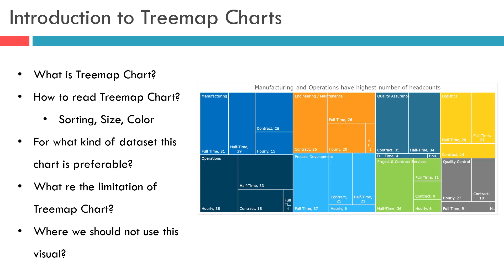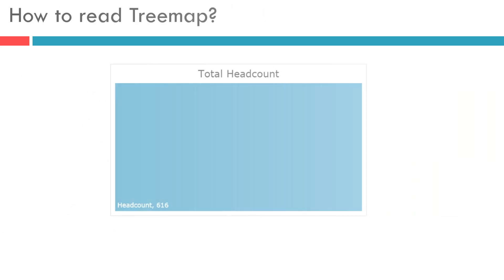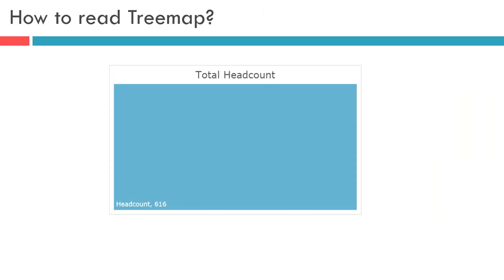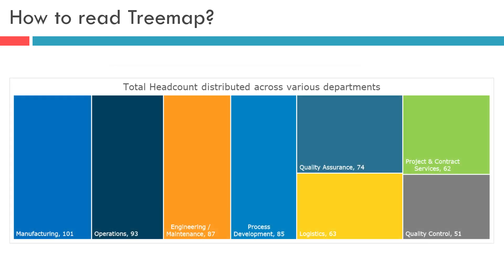It is important to note that the size of each rectangle is determined by the data itself, and a Treemap cannot be used to show zero or negative value data points. Now imagine you have a single box showing a total headcount as shown on screen. We can add a first level of hierarchy for the headcount of each department, reflected by a separate color for each department and rectangle size based on the department headcount, just as shown on screen.